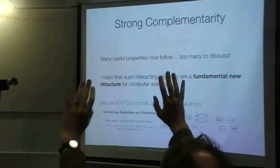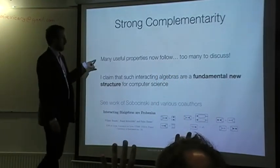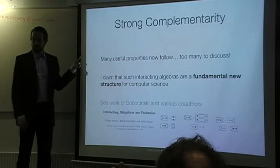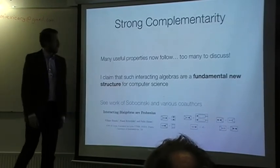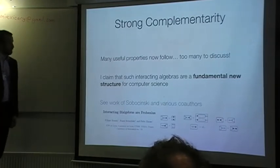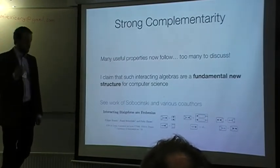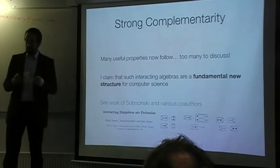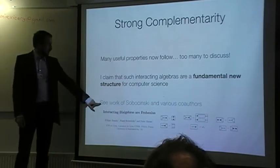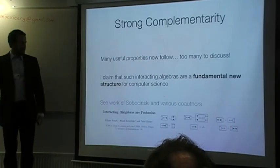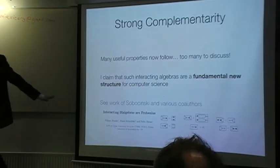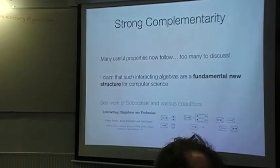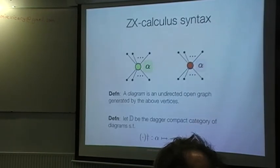Now, from this, an enormous number of interesting things happen. But I will not discuss that in detail. But I will claim that these interacting Frobenius algebras are a fundamental new structure for computer science. So we have done lots of work using this equational theory to prove things in quantum mechanics. But quite recently, Pawel Sobociński and various collaborators have found the same structures in the world of Petri nets. So this has suddenly surfaced again for completely independent reasons.